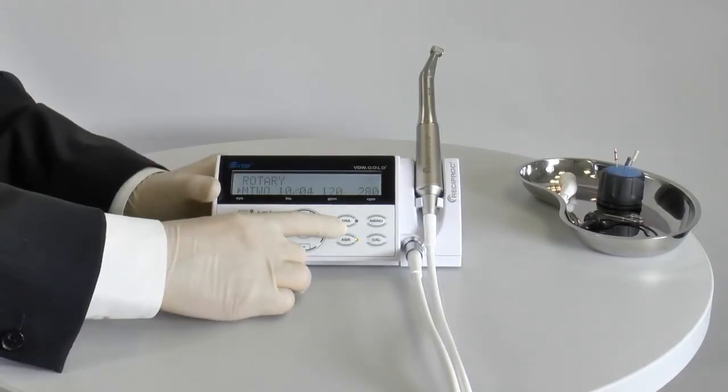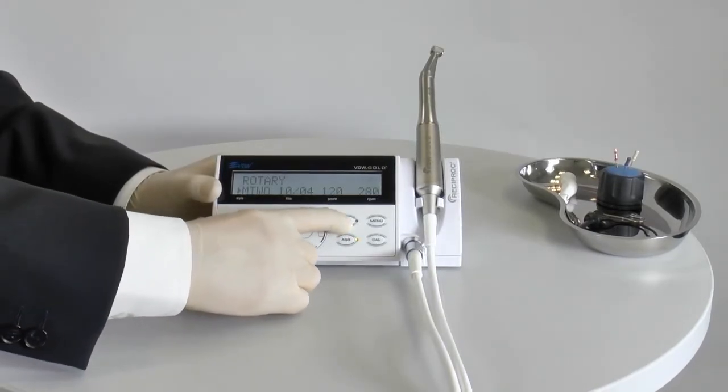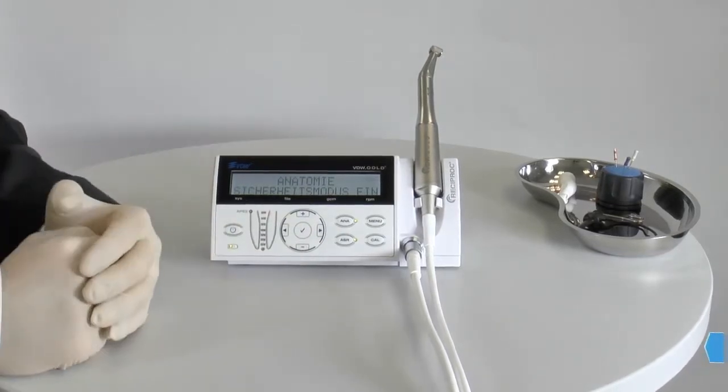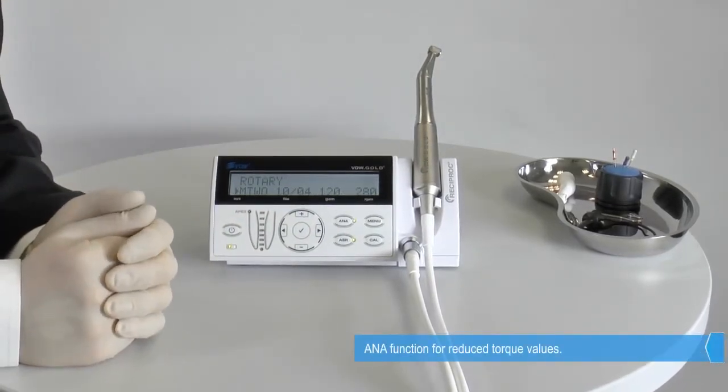The second safety function for rotary file systems is activated by the ANA key. The abbreviation ANA stands for the word anatomy, or rather difficult anatomy.